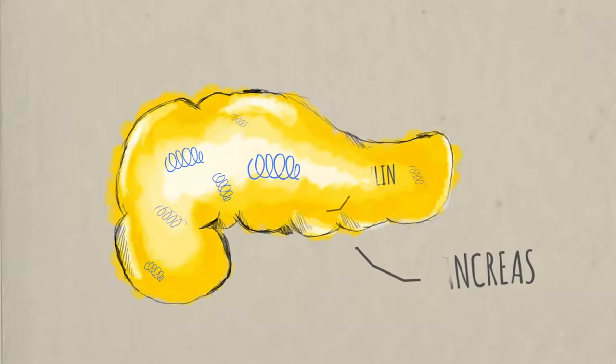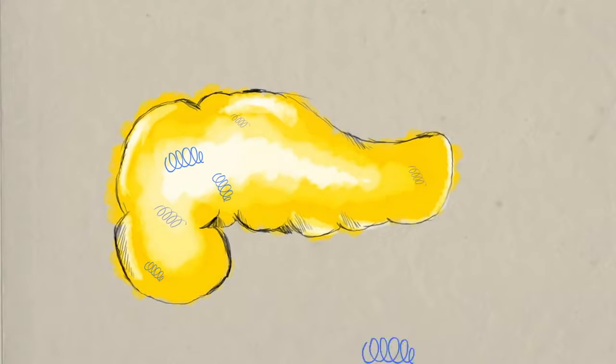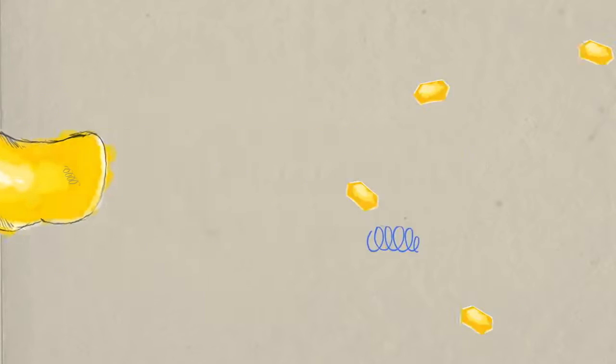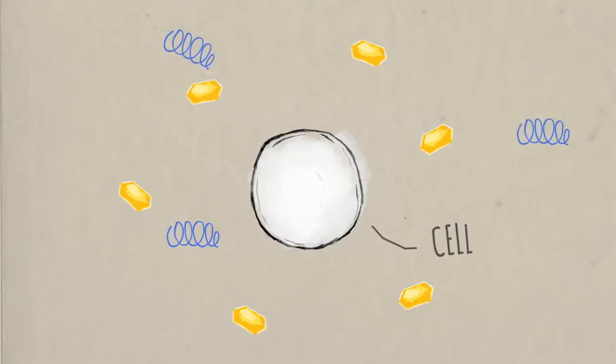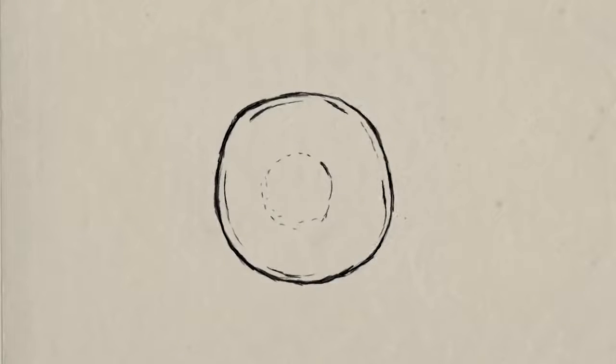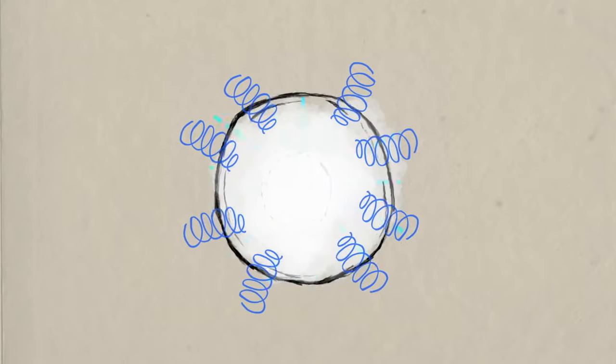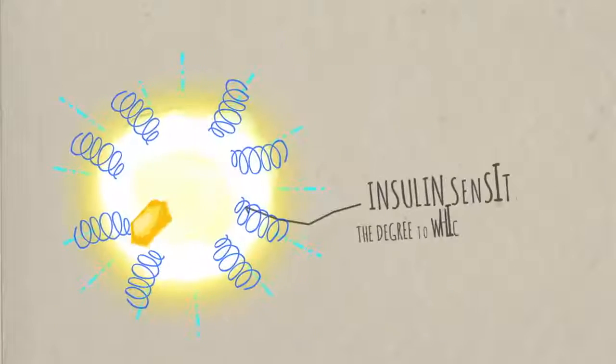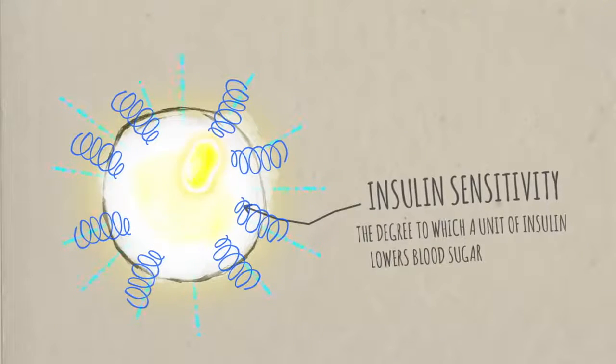When you eat and your blood sugar rises, insulin is secreted into the blood. It prompts your muscle and fat cells to let glucose in, and jumpstarts the conversion of sugar to energy. The degree to which a unit of insulin lowers the blood sugar helps us understand something called insulin sensitivity. The more a given unit of insulin lowers blood sugar, the more sensitive you are to insulin.